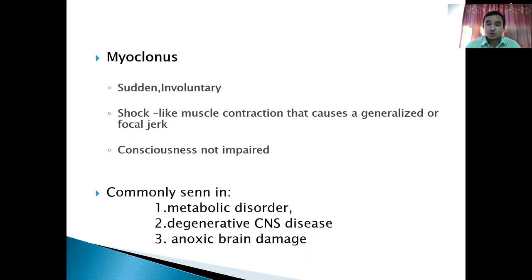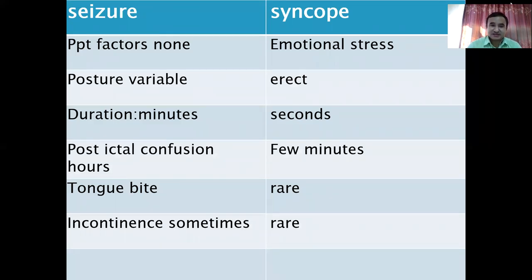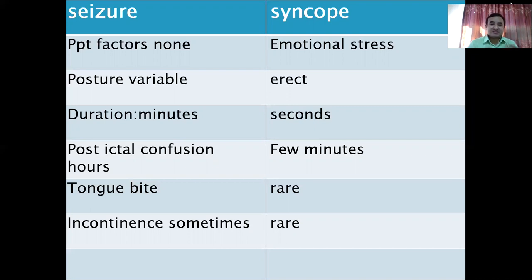When seeing patients in the clinic, there is often confusion between seizure and syncope. In case of seizure, the precipitating character is usually not known, whereas in syncope it may be emotional stress or seeing blood. Seizure can occur in any position, but syncope usually occurs in the erect position. Seizure lasts for minutes, whereas syncope duration is very brief. Post-ictal confusion, tongue bite, and incontinence are more common in seizure than in syncope.